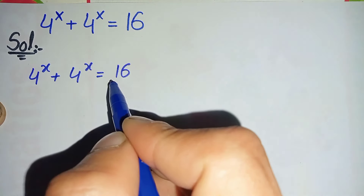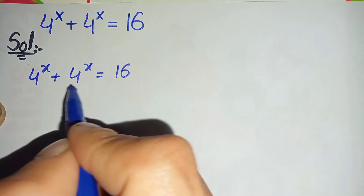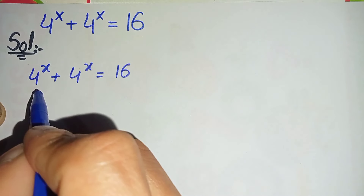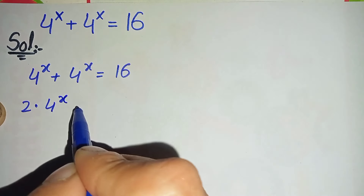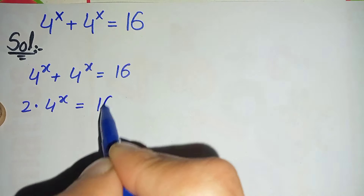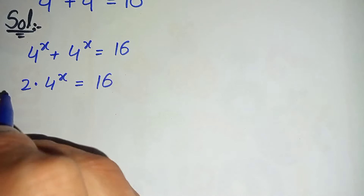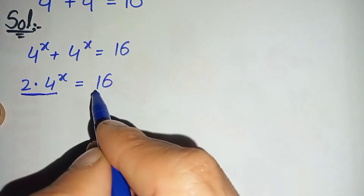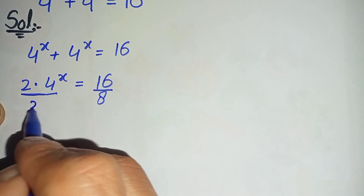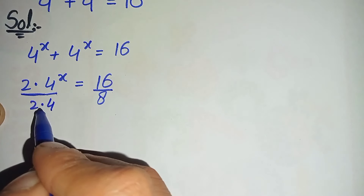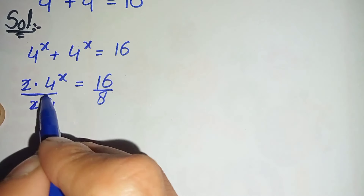I will solve this math problem using two different methods. In the first method, notice that 4 raised to power x is added two times, so we can write this as 2 times 4 raised to power x is equal to 16. Now the product of 2 and 4 is 8, so we divide both sides by 8. We can write 8 as 2 times 4, then cancel the 2 with the 2.